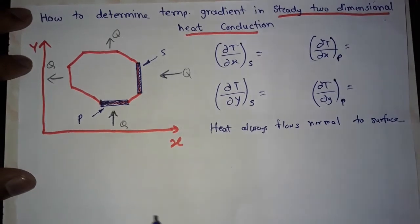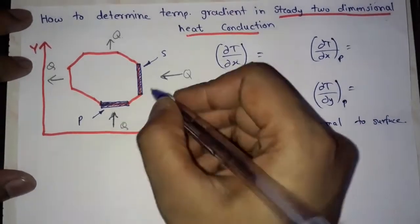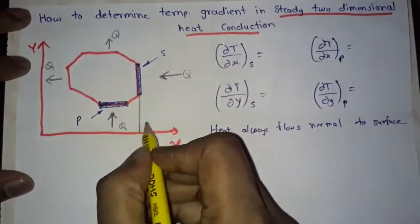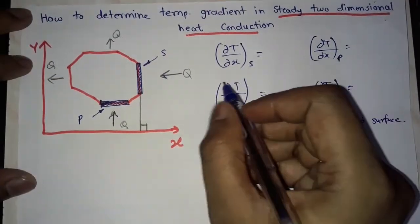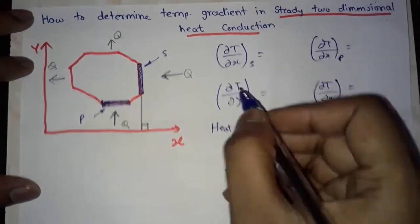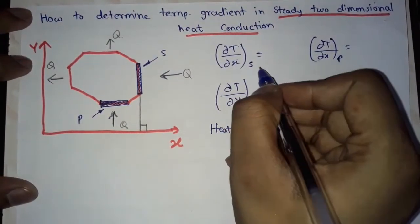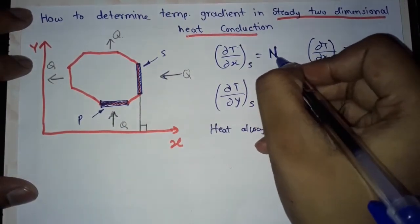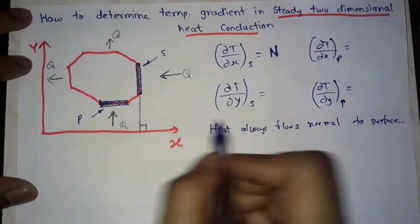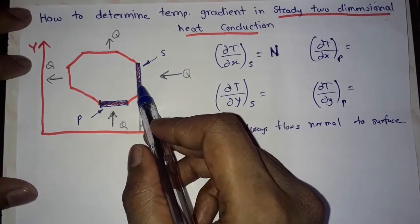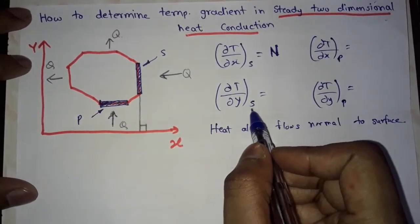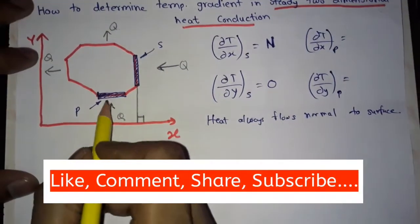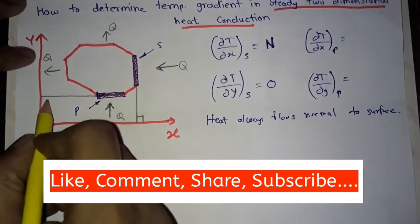As you can see, surface S is normal to the x-axis. So in the case of temperature gradient, ∂T/∂x for surface S will have some numerical value. And since this surface is not perpendicular to the y-axis, ∂T/∂y for surface S is zero.